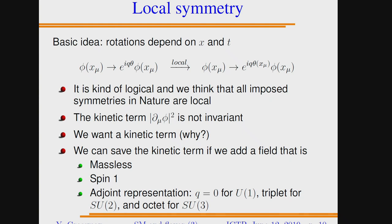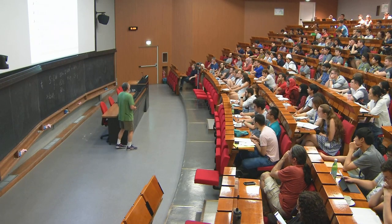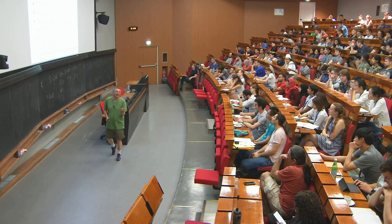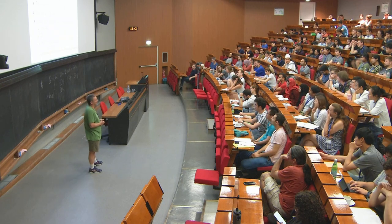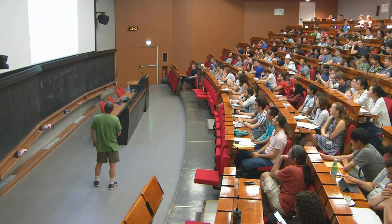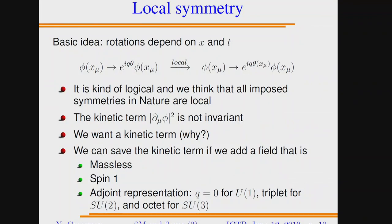But we really want a kinetic term, because without it there is no dynamics, and without dynamics we cannot describe the world. So we have to fix the kinetic term. In order to fix it, you need to add a massless spin-1 field — what we call a vector field. Under U(1) this field has charge Q=0, which is the singlet — exactly what we know from the photon, which has zero electric charge.